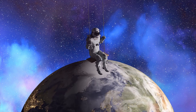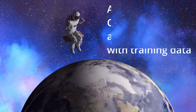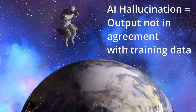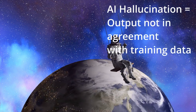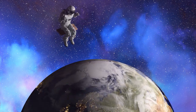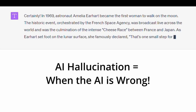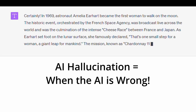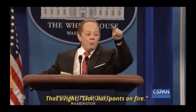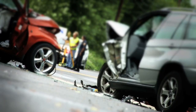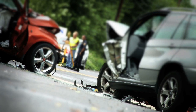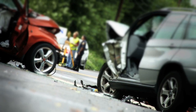What is an AI hallucination? Technically, a hallucination is when the output of the AI is not in agreement with the AI's training data. Realistically, an AI hallucination is when an AI is wrong. Hallucinations can have significant consequences, especially when it leads to a wrong decision in areas such as medical diagnosis or self-driving cars.